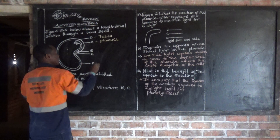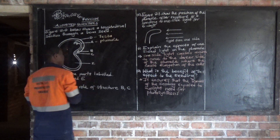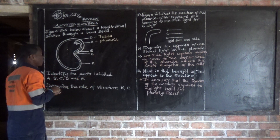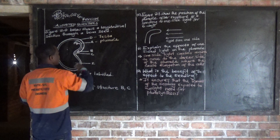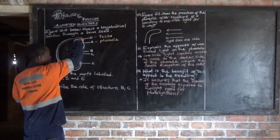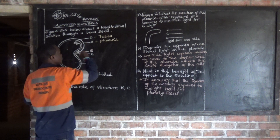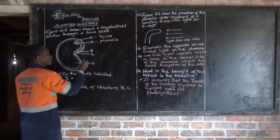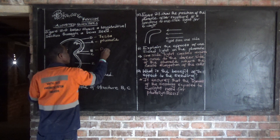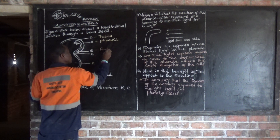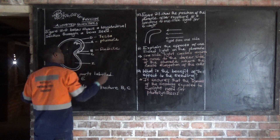So this one is called the broom layer. Then we have our B, the one which is now developed into a shoot system — this is our radical.